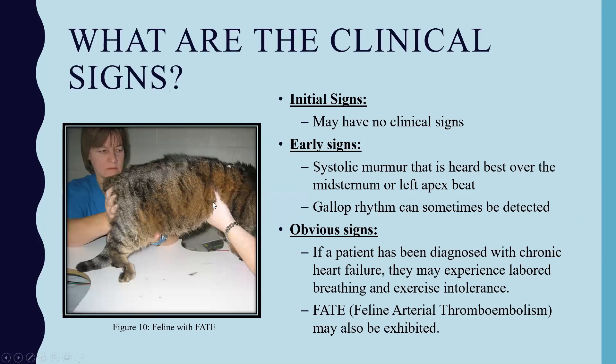Most cats have no initial clinical signs and may suddenly develop severe heart failure or a systemic thromboembolism. In many cases, cats have no evidence of a heart murmur to allow for early intervention. If early signs are present, it's typically in the form of a systolic murmur detected during regular veterinary physicals. The vet may also detect a gallop rhythm, which typically indicates the left ventricle is starting to stiffen and thicken.